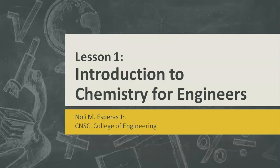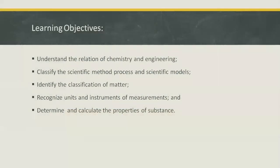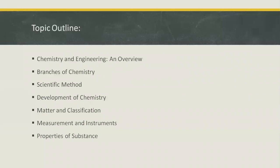Good day! Welcome to our first lesson in Chemistry for Engineers, an introduction. Our learning objectives are: understand the relationship of chemistry and engineering; classify the scientific method process and scientific models; identify the classification of matter; recognize units and instruments of measurements; and determine and calculate the properties of substance.